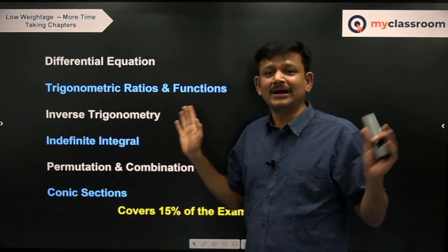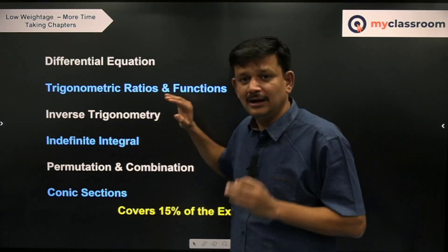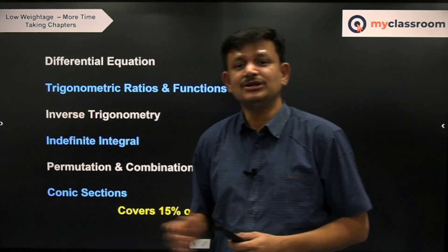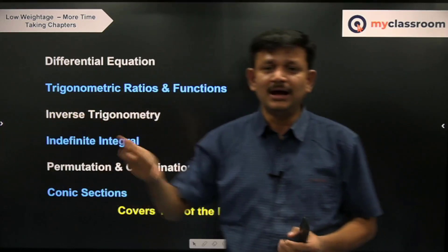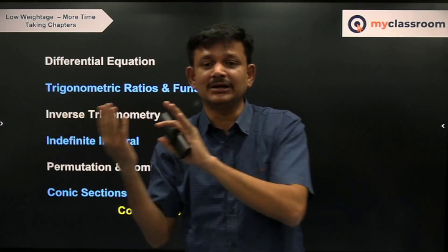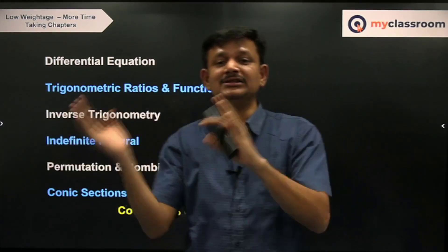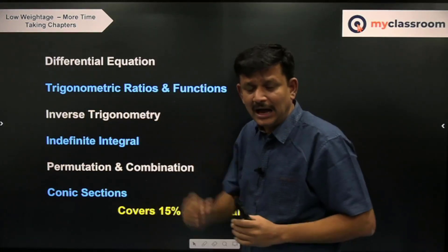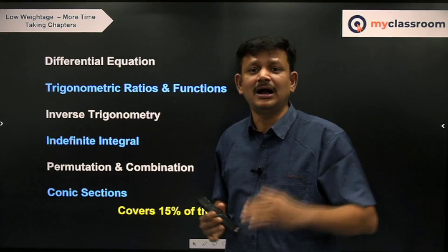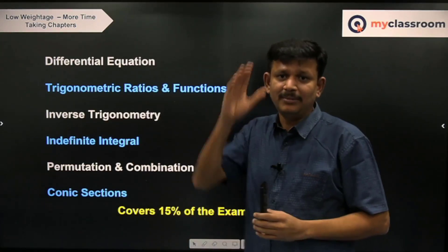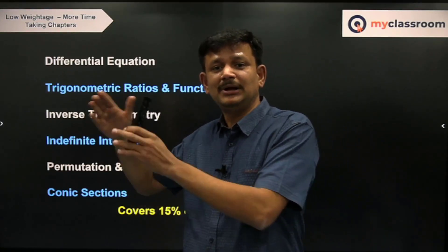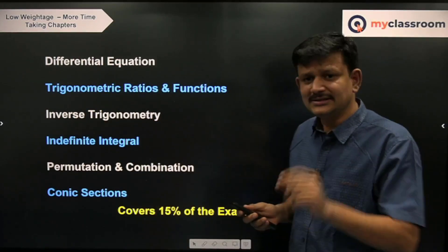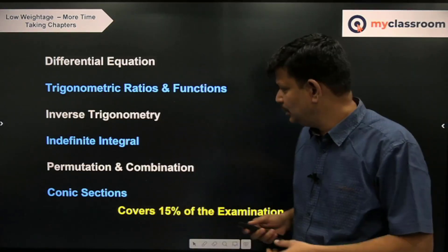For Indefinite Integrals, do archive questions. Questions are not based on huge substitutions or many formulae. Major questions revolve around the formula e^x · [f(x) + f'(x)] or identification of the anti-derivative — by looking at the question you can see which function's derivative it is, perhaps by multiplying or dividing by x. One very important concept is binomial integrals — of the type 1/(x^m · (x^n + 1)^p) — regularly asked and a simple concept: either substitute directly or take x^n out and then substitute.